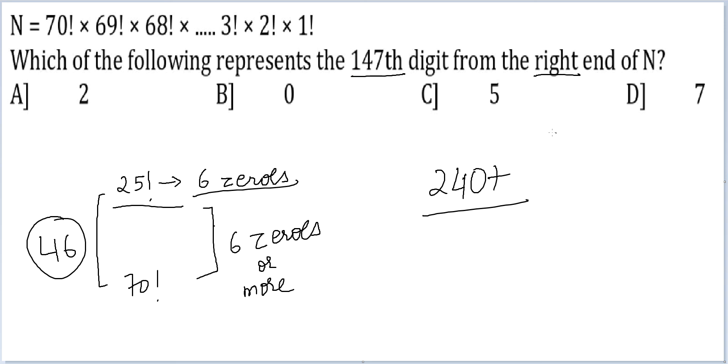So when it asks me the 147th digit from the right end of N, my answer will be the digit is zero itself. I don't need to calculate it any further.